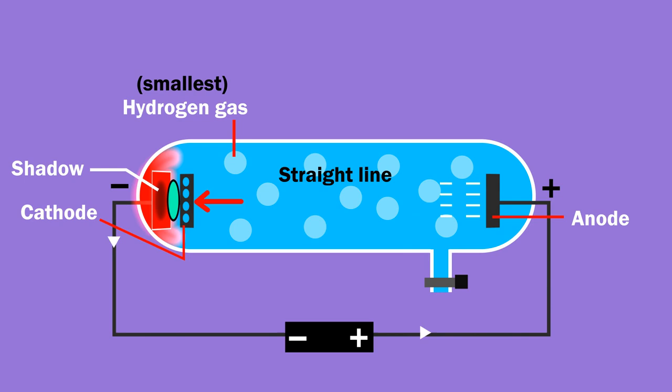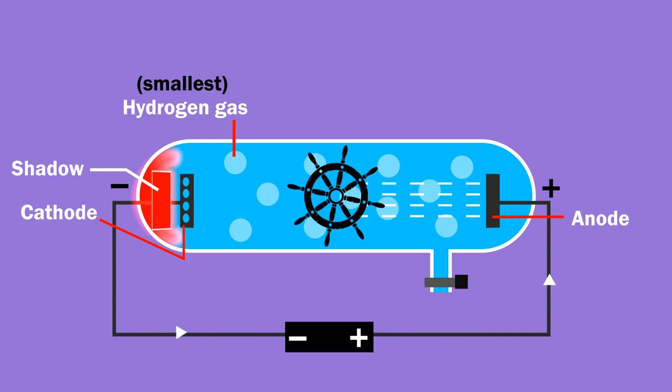If a paddled wheel was kept in the path of rays, it started moving. This suggested that these rays have mass.